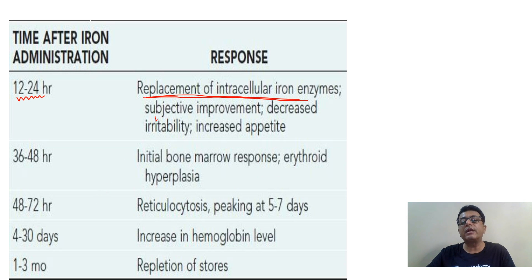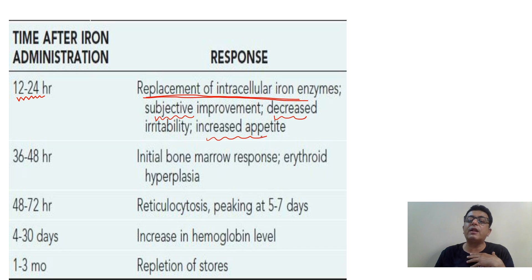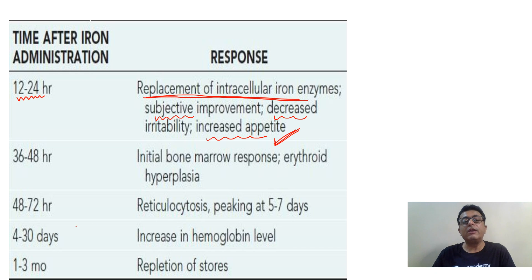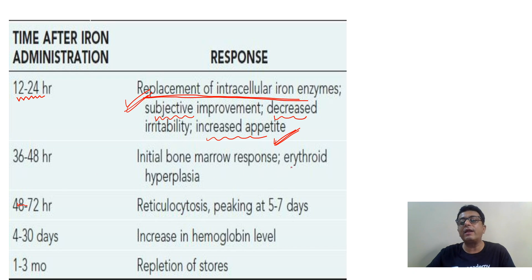This leads to subjective improvement: decreased irritability and increased appetite. Whenever a patient comes to a pediatrician with complaints of decreased appetite, they start iron because iron increases appetite. In 12 to 24 hours, replacement of intracellular enzymes is the earliest change. Then at 36 to 48 hours, erythroid hyperplasia occurs.